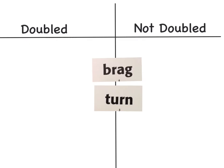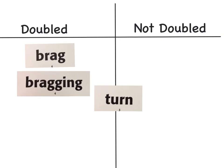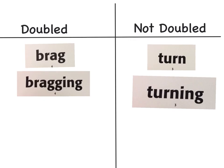Let's read these two words — brag and turn — and think about if we need to double the consonant or not before adding ING. For the word brag, we have a vowel consonant pattern, so we need to move it to the doubled category. We spell bragging with two G's and an ING. Now look at the word turn: we have a vowel consonant consonant pattern, so it goes in the not doubled category. With turning, we just add ING.